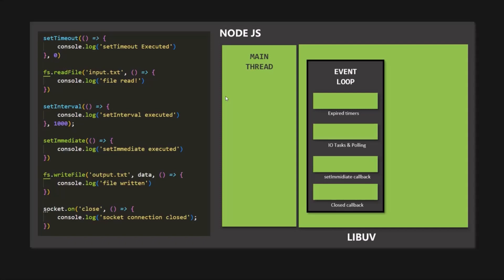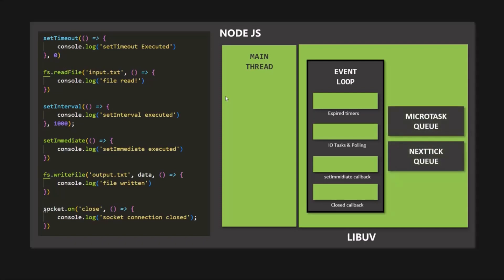So those are the four important phases of the event loop, each with its own callback queue. Besides these, we have two more important callback queues: the microtask queue and the nextTick queue. The microtask queue stores callback functions attached to a resolved promise, and the nextTick queue stores the callback function attached to process.nextTick. These two queues are not related to any phase of the event loop — they are independent queues. If there are any callback functions in one of these two queues, they will be executed right after the current phase finishes, instead of waiting for the entire event loop to complete.